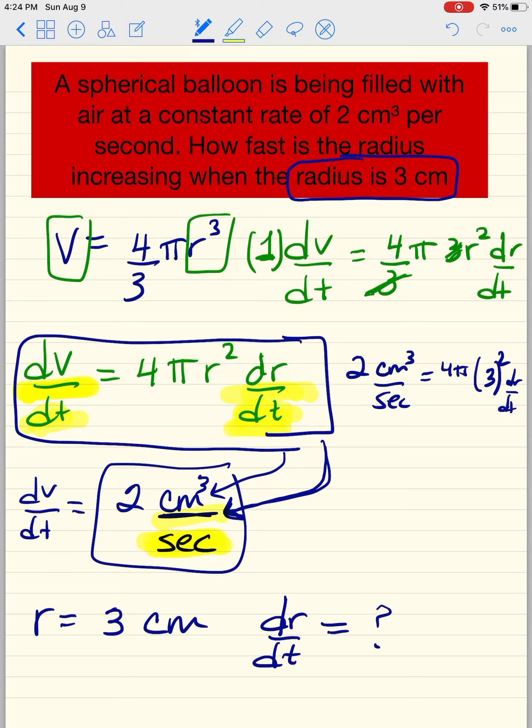And your r is centimeters, so it should be centimeters squared. So you have 2 equals 4π times 9 dr/dt, 2 equals 36π dr/dt, and once you divide, it's going to be 2 over 36π equals dr/dt, and so that's 1 over 18π equals dr/dt.